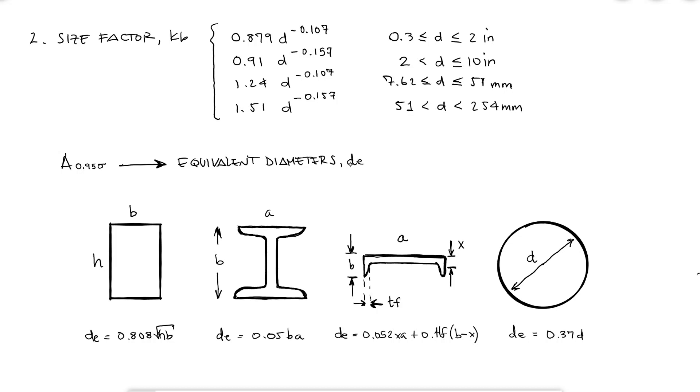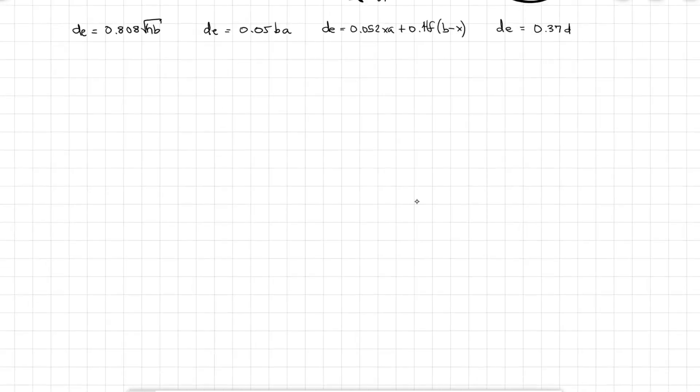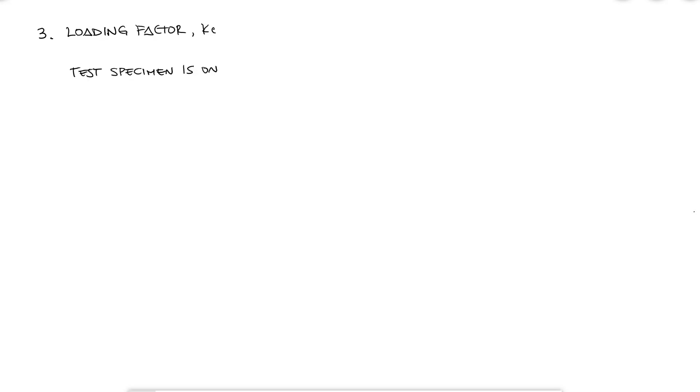The loading factor Kc accounts for the fact that the relationship between the ultimate strength and the endurance limit is not the same when the sample is subjected to bending, torsion, or axial loading, or even a combination of two or more. For that reason, we use 1, no modification for bending, since the bending is what is used in the lab tests, 0.85 for axial, and 0.59 for torsion. When torsion is combined with other types of stress, you can set Kc to 1 and use the von Mises stress we studied during the failure criteria videos.